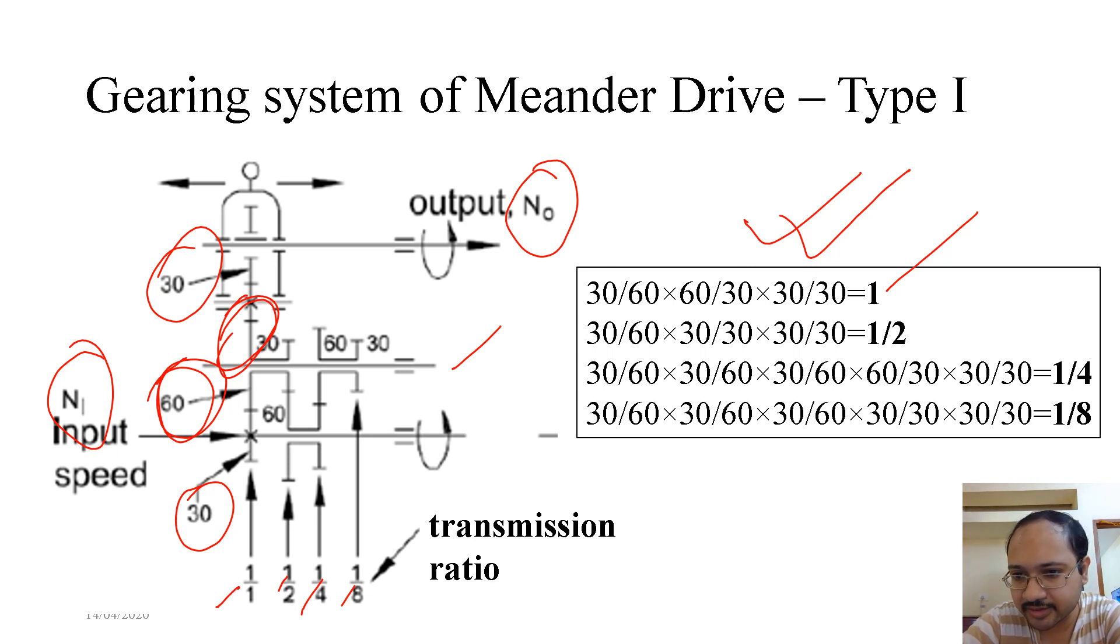Similarly, if we move on to the next one, we'll get 1/2. To the next one we get 1/4, and finally 1/8. So these are the four transmission ratios that can be obtained from Type 1 gearing system.